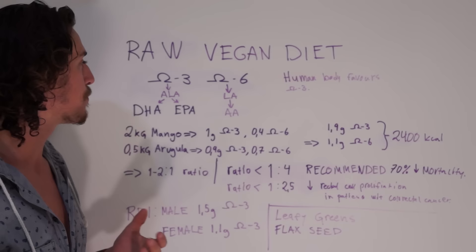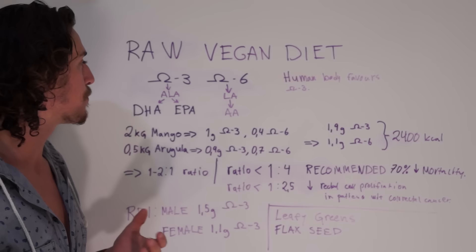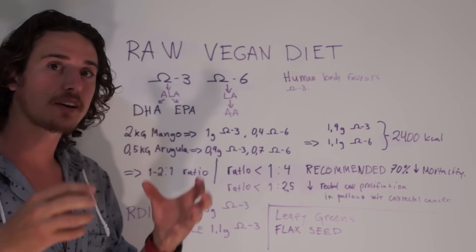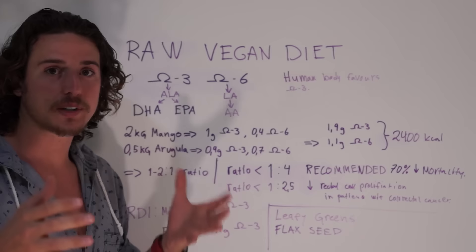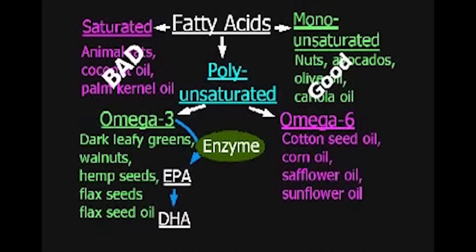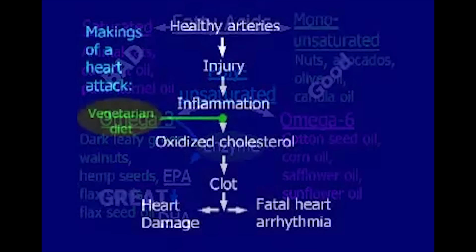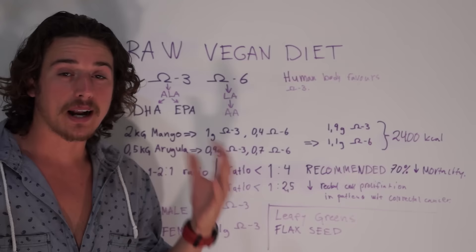So in a raw vegan diet, you have omega-3 and omega-6. Omega-3 is converted to ALA and then it is converted to DHA and EPA, which are the health components that decrease mortality from cardiovascular disease. These are great!